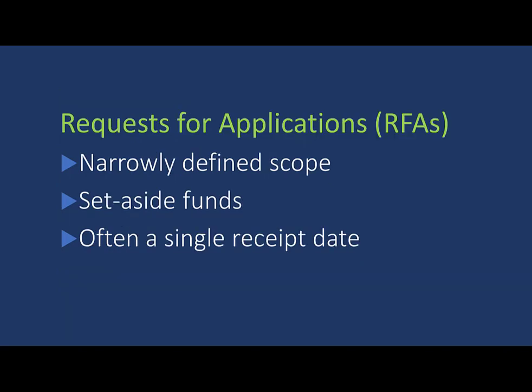Requests for Applications have a narrowly defined scope. The participating ICs set aside funds in their budgets to award applications submitted to each RFA. The Award Information section of the RFA indicates the number of expected awards and/or the amount of funding that's been set aside. RFAs often have a single receipt date and may not be posted again.